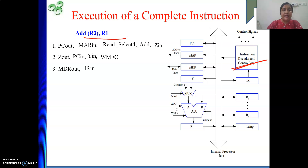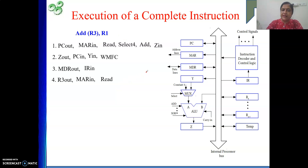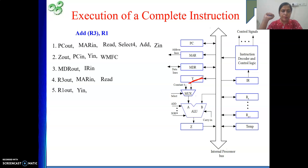From step 4, we start the execution phase. We need to get data from memory whose address is in R3. So: R3 out, MAR in, then read signal. Can we also do R1 out, Y in here (to prepare the other ALU input)? No — two register outs are not possible in the same clock cycle on a single bus. So in the next clock cycle: R1 out, Y in. R1's content is placed on the bus and given to the Y register. Now one input is held in Y; the other will come from memory. Then WMFC — wait for memory.